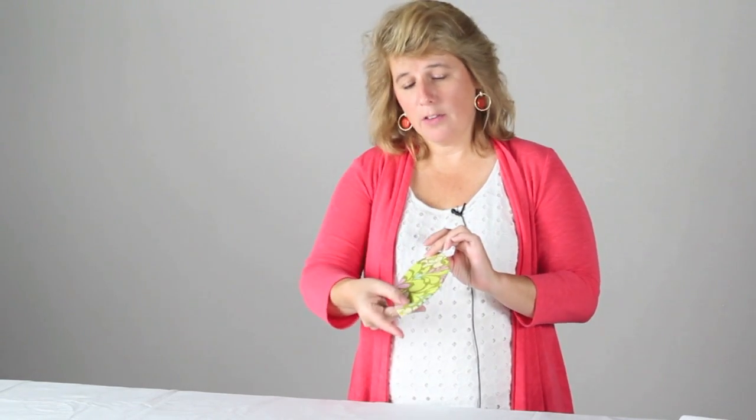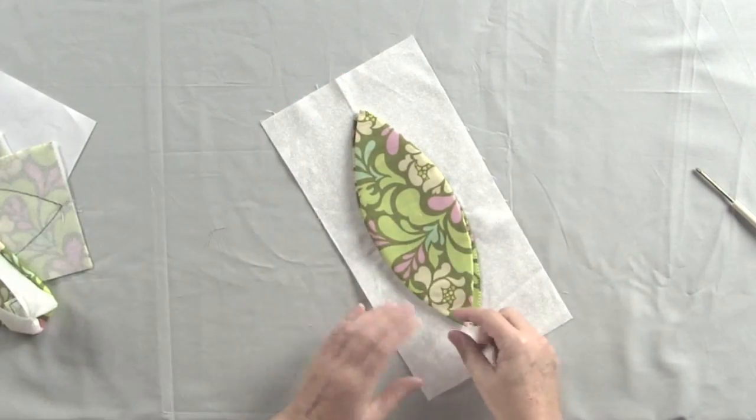Once your applique piece has been turned inside out so that now the glue side of the fusible interfacing is on the back and the right side of the fabric is on the front of the unit, all of your raw edges are now turned under. And you are ready to take a hot iron and fuse this piece to a piece of background fabric.